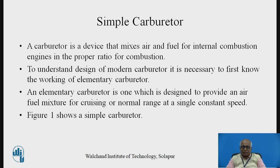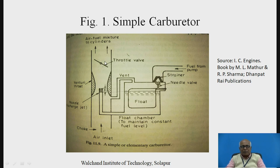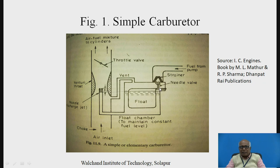Figure 1 shows a simple carburetor. In this figure, you can see this is the air-fuel mixture, which will be taken inside to the cylinder. This is the throttle valve, which controls the quantity. This is the venturi shape. This is the main jet, which is supplying the fuel through this orifice. This fuel is coming from this chamber, which is known as the float chamber. Here there is a float, and attached to this float there is a needle valve. This is connected to the fuel supply coming from the tank. This is the choke, and this is the air flow from the atmosphere.